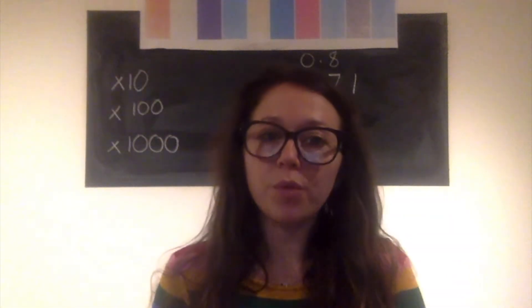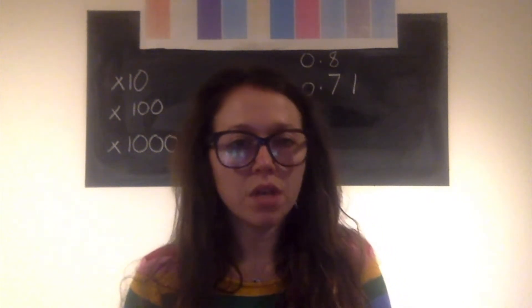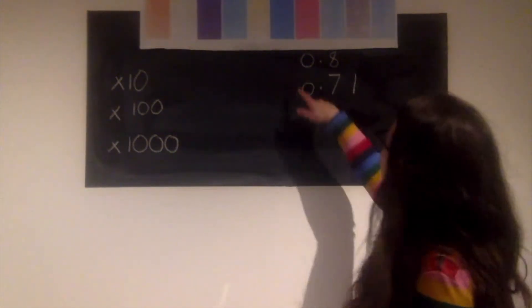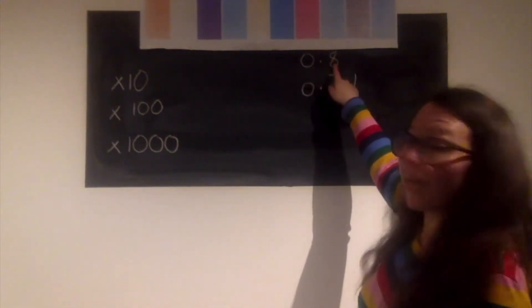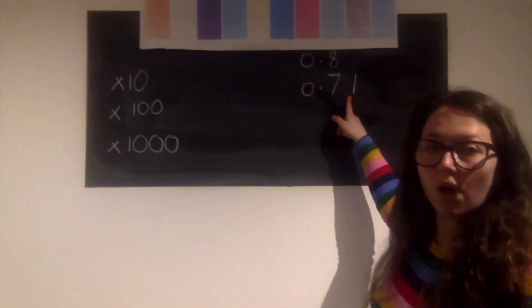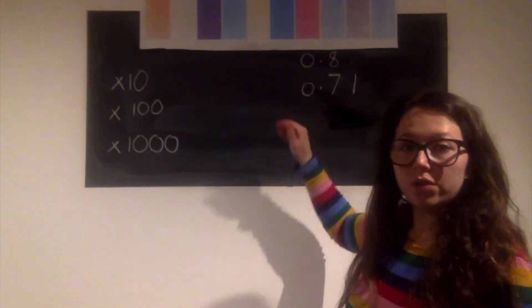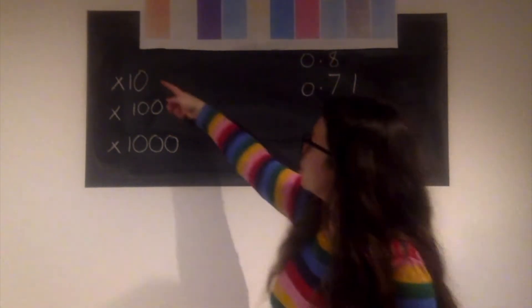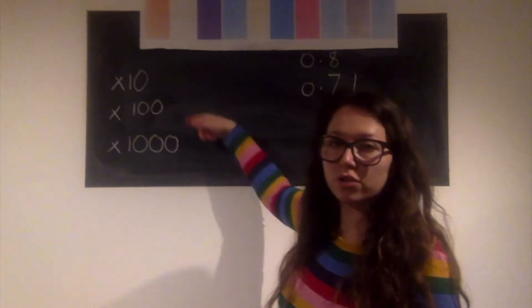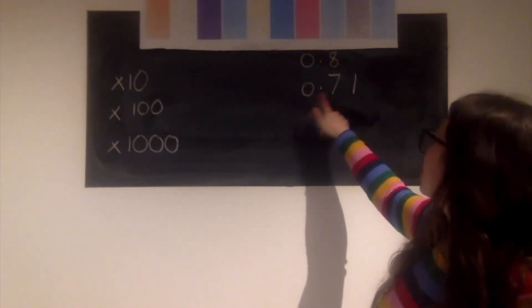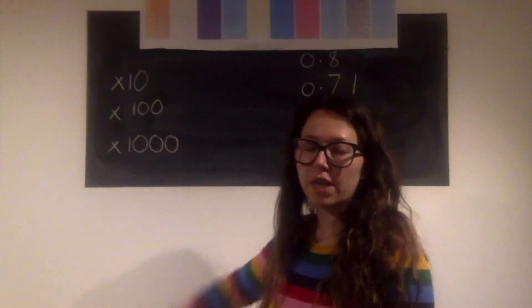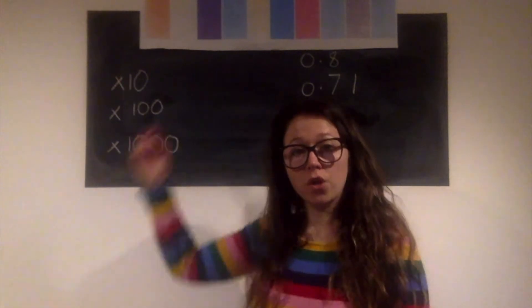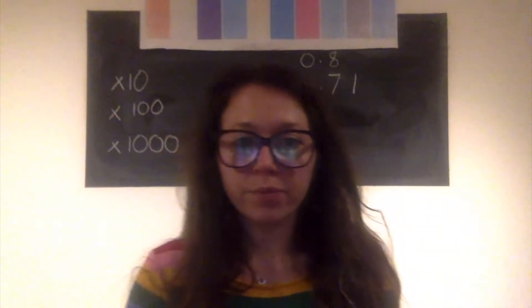The next thing I want us to do — something we should be well practised at — is multiplying our decimals by 10, 100, and 1000. To start off we've got two decimals, 0.8 and 0.71, and I want you to multiply both of them by 10 and by 1000. Remember you've got your place value grid to help you.